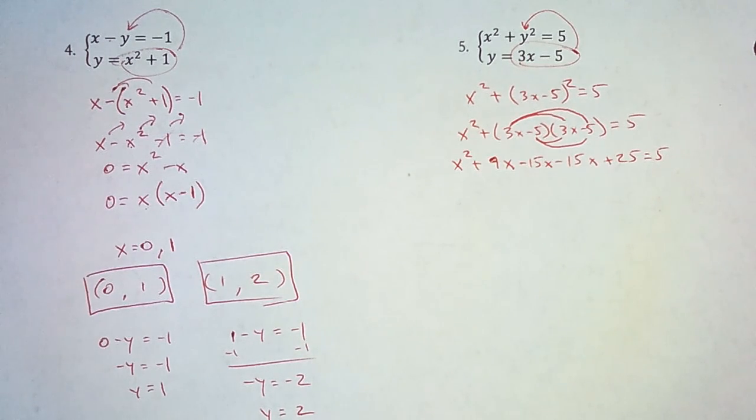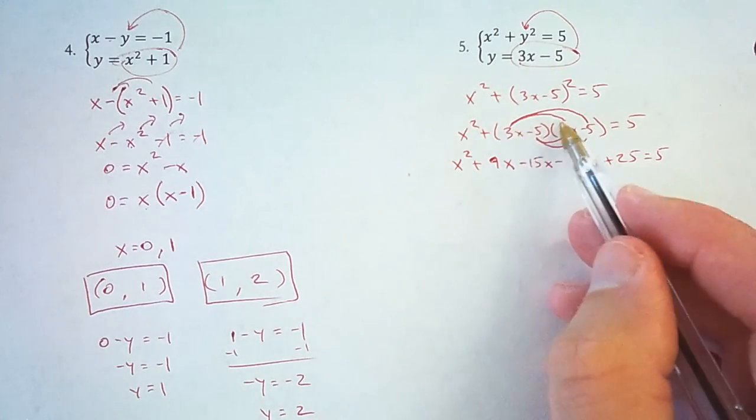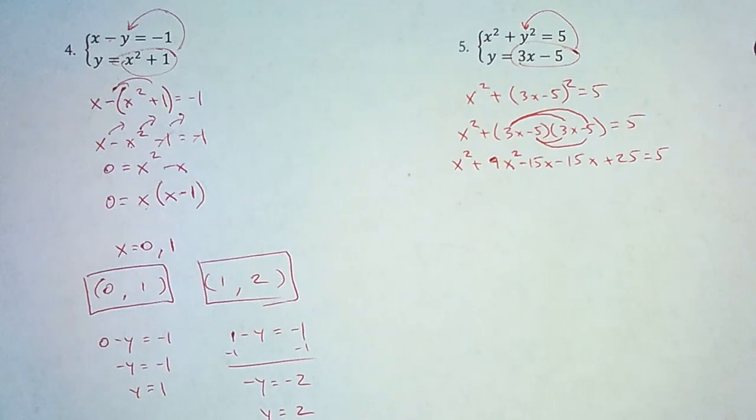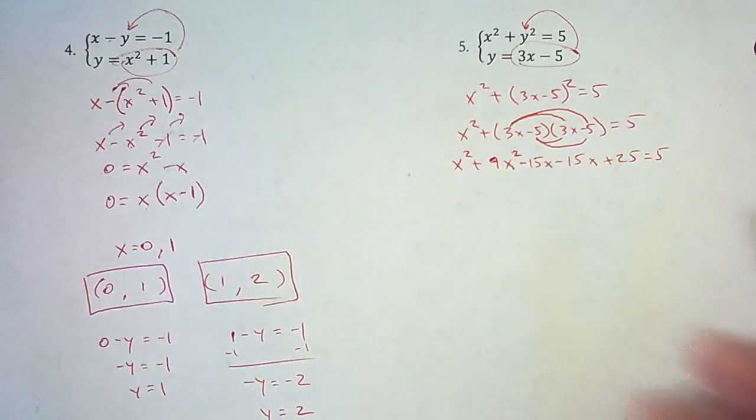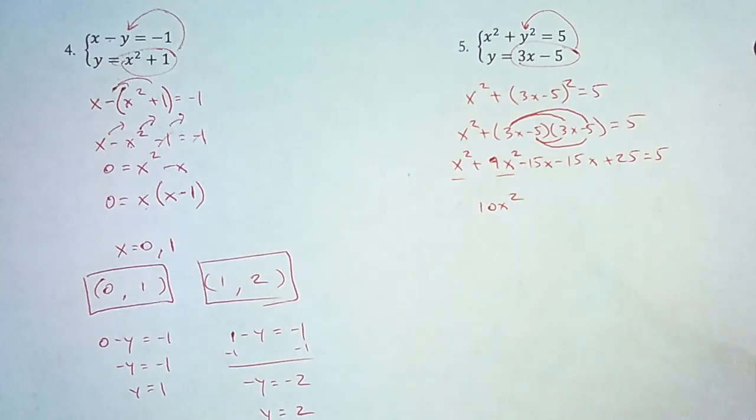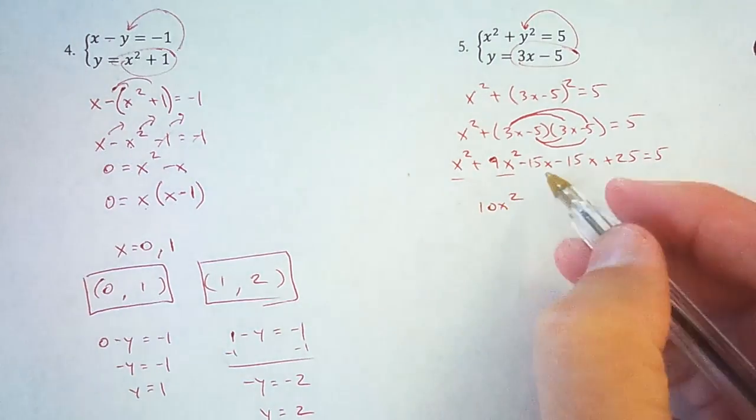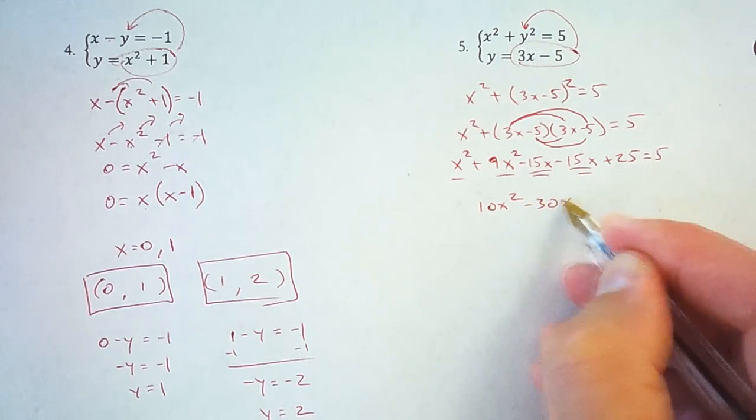Now let's combine any like terms. So we've got, and this is a mistake right here, 3x times 3x is 9x squared. So now that that's fixed, let's combine like terms. x squared and 9x squared is 10x squared. Negative 15x and negative 15x is negative 30x.